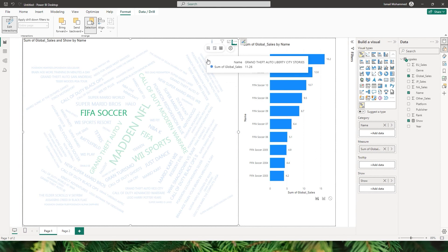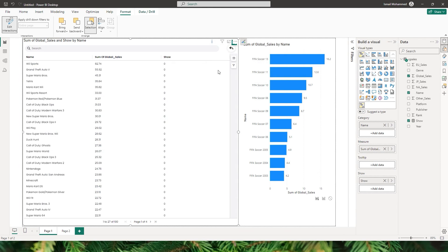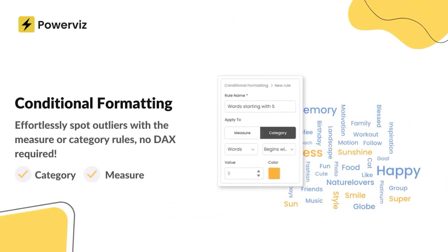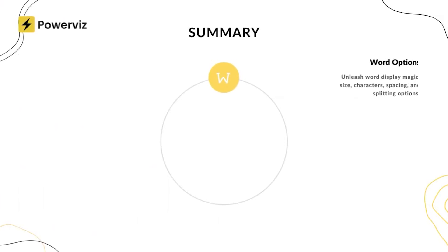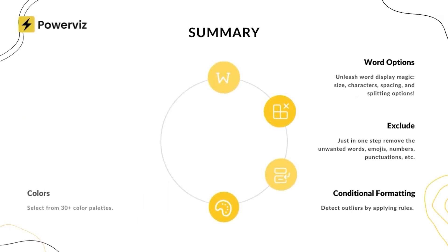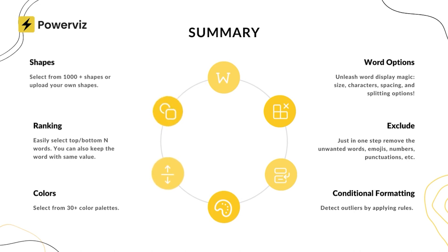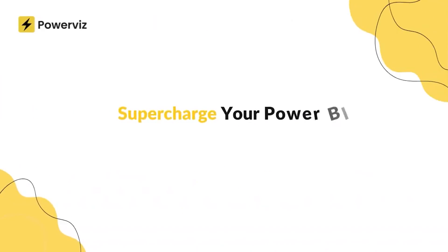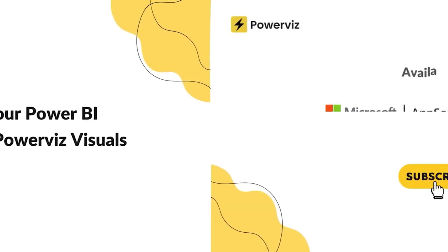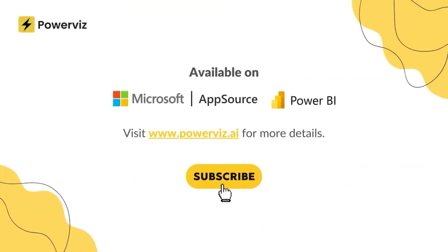There's also a grid view option where you can see the data in a tabular format. With that, we've come to the end of this guide. I hope you've now mastered the key features of PowerWiz's word cloud visual. Feel free to experiment with different settings and unleash the full potential of this advanced word cloud visualization in your Power BI reports. Until then, happy analyzing!